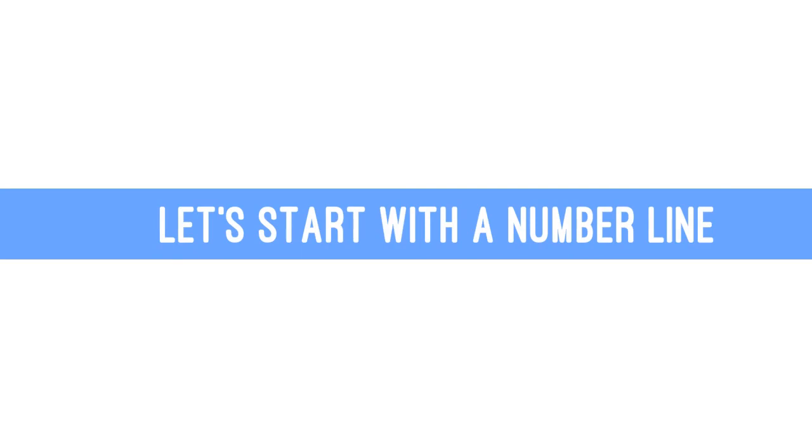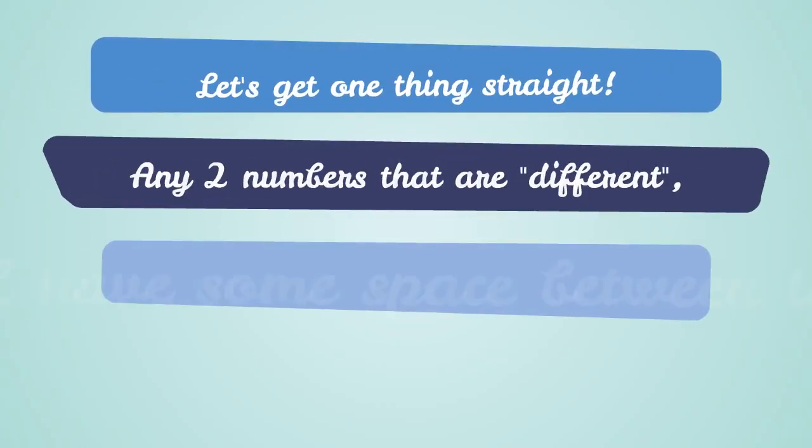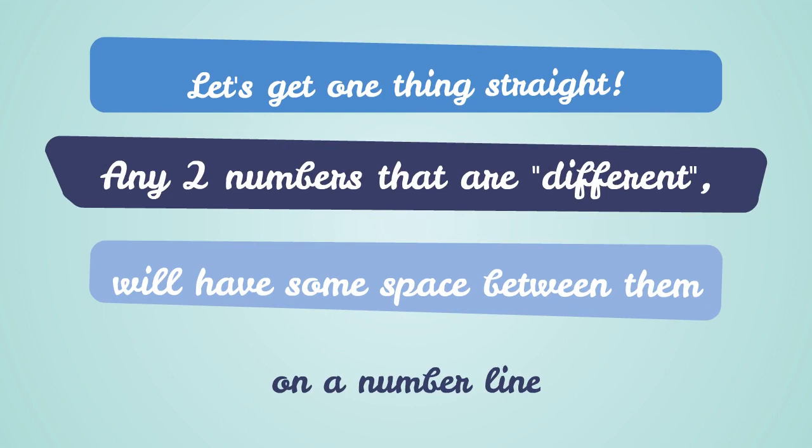Let's start with a number line. Let's get one thing straight. Any two numbers that are different will have some space between them on a number line, so that the number line stays continuous.